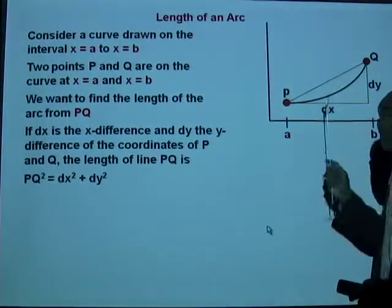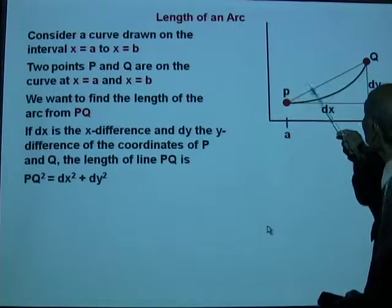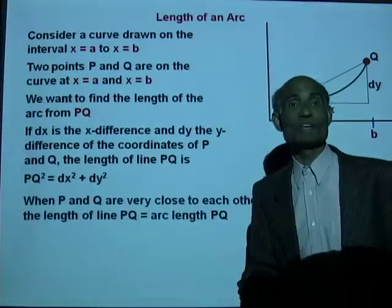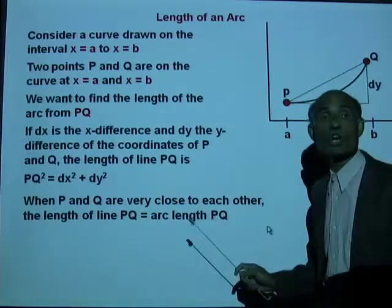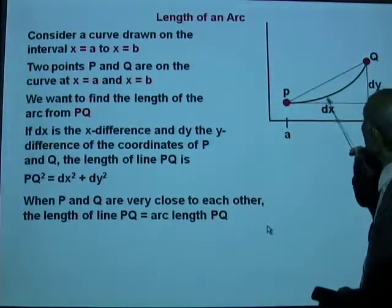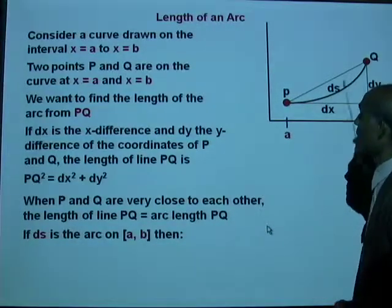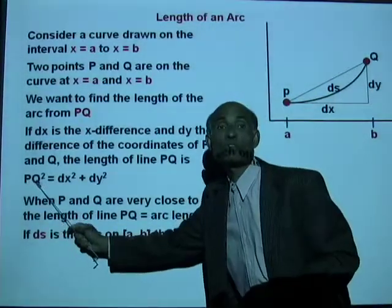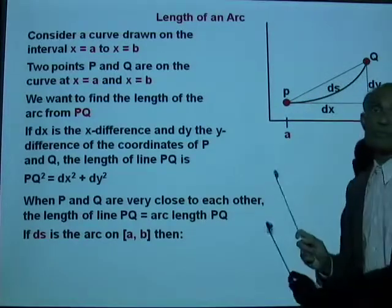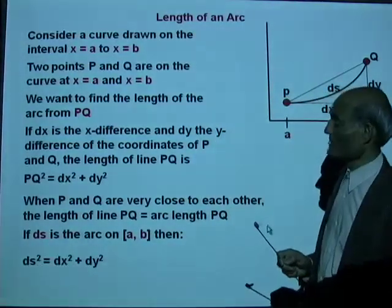Now, if p and q are sufficiently close to each other, then the length of the arc pq will actually equal the length of the straight line pq. When p and q are very close, the distance is very small, so the line length equals the arc length. If ds is the length of the arc, we replace pq by ds. So ds² = dx² + dy².